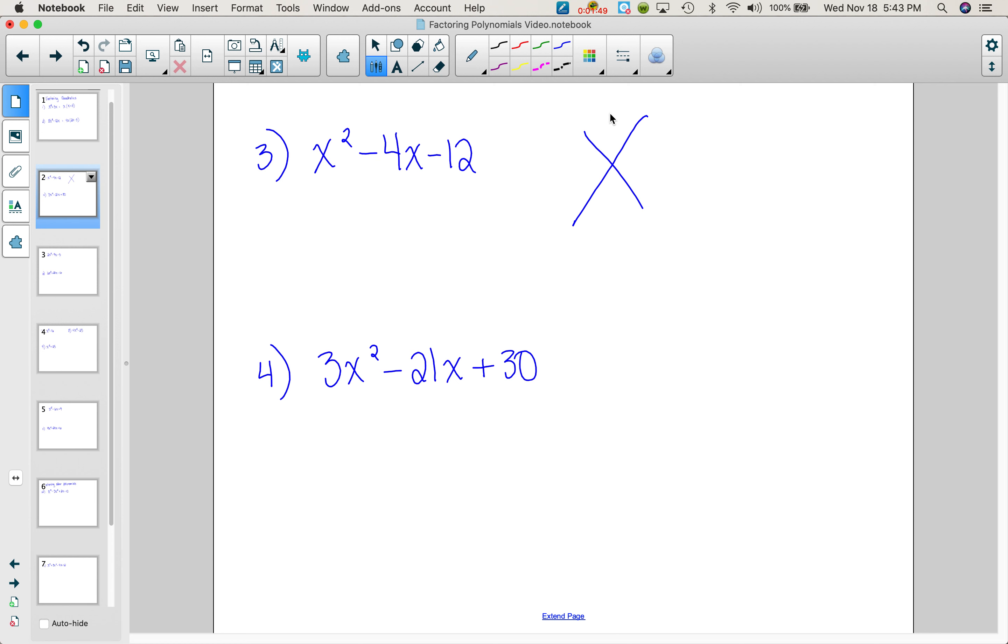So you can do a diamond problem. Remember the product goes here, the sum here. So the product is negative 12. The sum is negative 4. I'm looking for two numbers that multiply to a negative 12, which means one's negative and one's positive, and the difference of the two numbers has to be 4. So that means we're looking at negative 6 and a positive 2. So I do the diamond problem and I can factor. I don't need the box because it's just an x squared. So I'm going to have x minus 6 times x plus 2. And that's done.